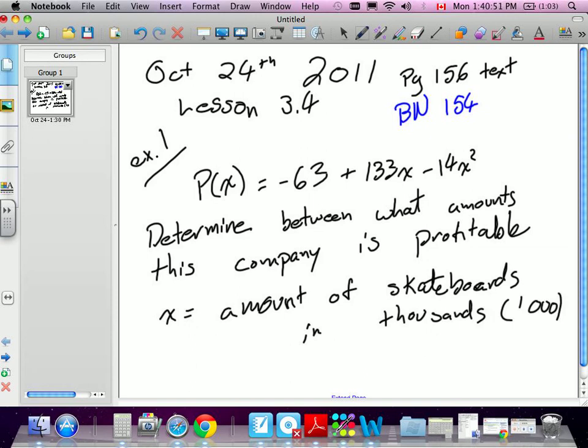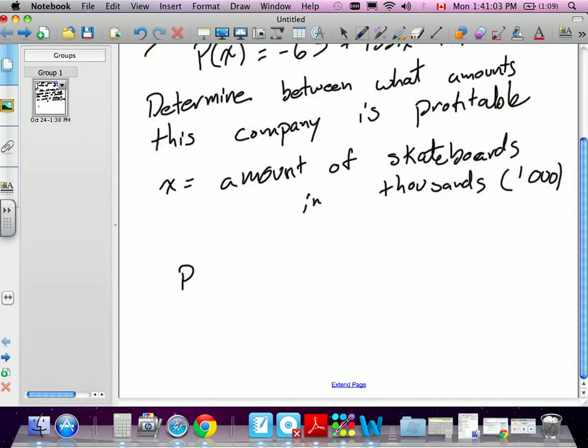In order to find out where a company breaks even or how they're profitable, we're going to roughly estimate this graph. So I'm going to rearrange this equation. We normally put the variable with the highest exponent first when we're ordering the polynomial. So what that means is this equation, we have negative 14x squared, so that will be our first term. Then we drop in degrees. The next one is 133x, finally minus 63.